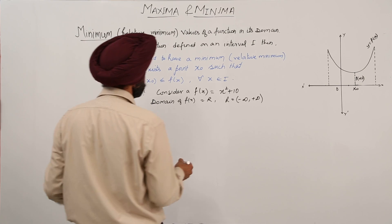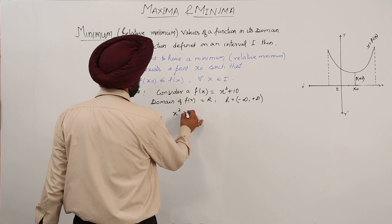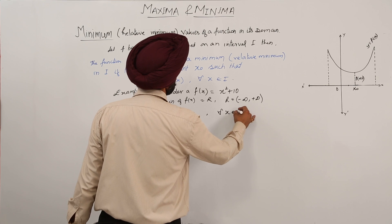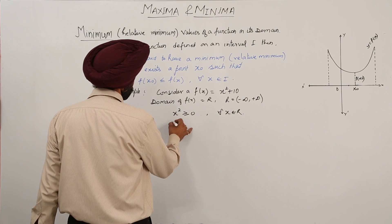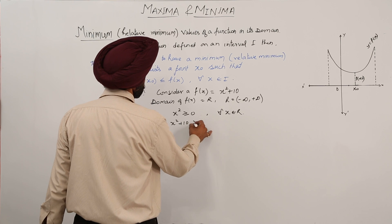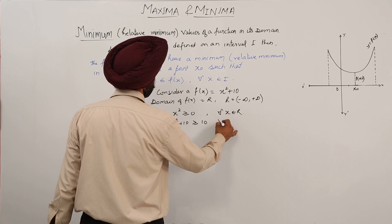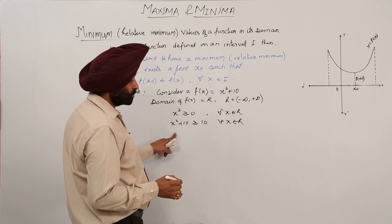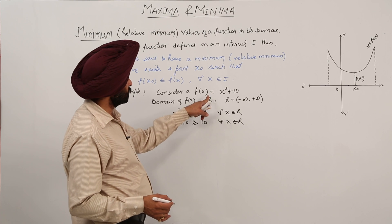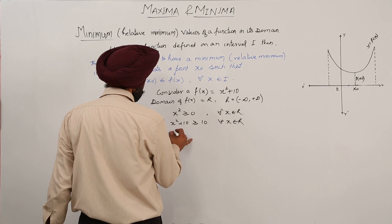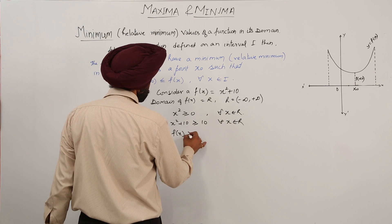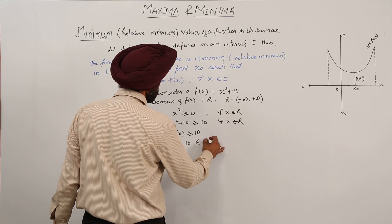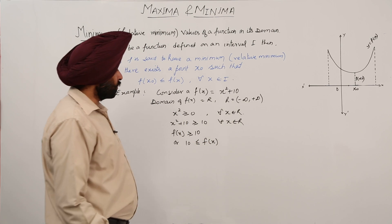Since x² is greater than or equal to 0 for all x belonging to R, we have x² + 10 is greater than or equal to 10 for all x belonging to R. Since the given function is f(x) = x² + 10, we can write f(x) is greater than or equal to 10, or equivalently 10 is less than or equal to f(x).